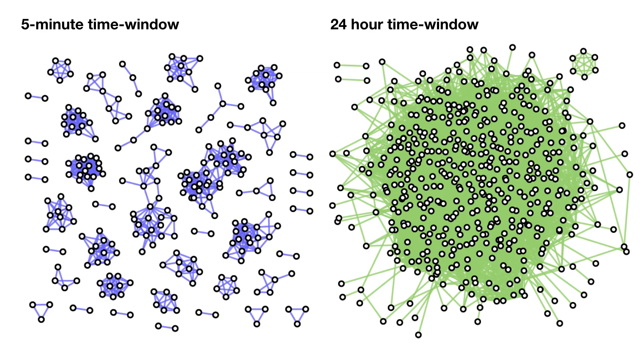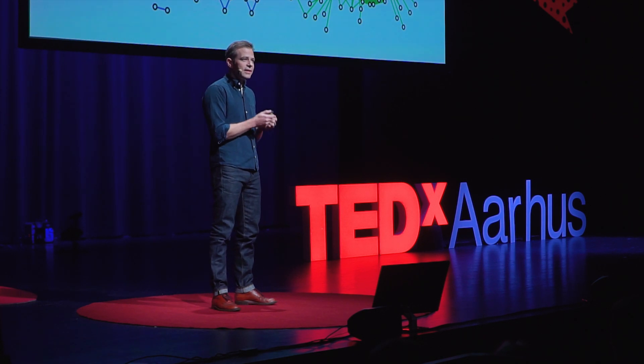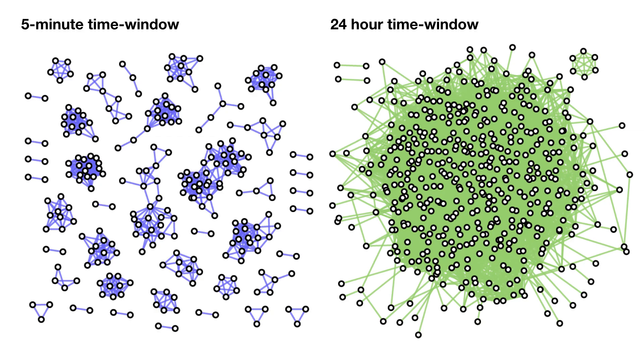The blue network takes advantage of this super-detailed data we had collected. No one had ever seen what five minutes of a social system looks like. The green network — that's real data for the same people — is what researchers had looked at up until then, which is why the patterns my team found were invisible to them. Because we were observing the system for the right amount of time — that five-minute window — the network fell into bits and pieces, each little piece being a group of people hanging out. Simply by collecting better data, we had solved the fundamental problem of finding groups in social networks.